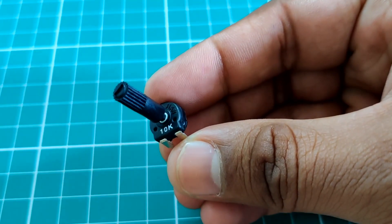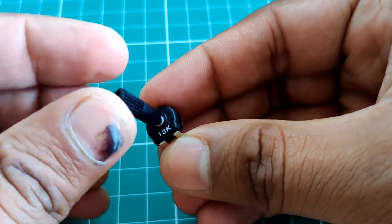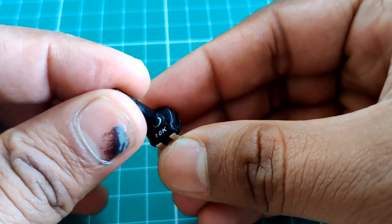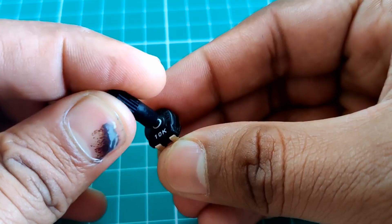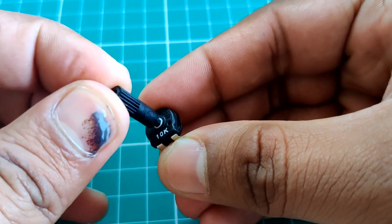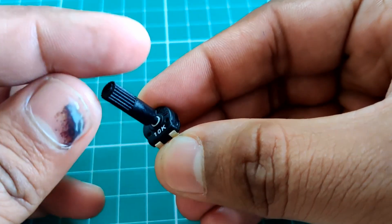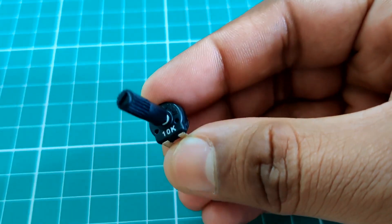For getting analog values, the best thing to use is a potentiometer. We will connect one end of it to 3.3V and the other end pin to ground. The center pin will give us variable analog values ranging from 0 to 3.3V based on how we rotate the potentiometer.